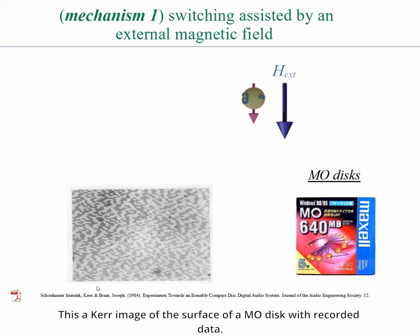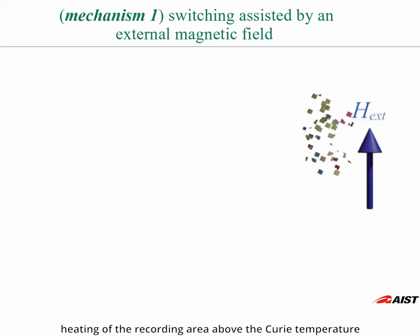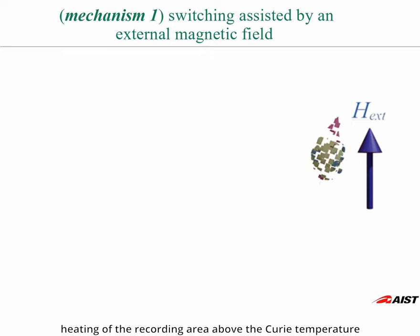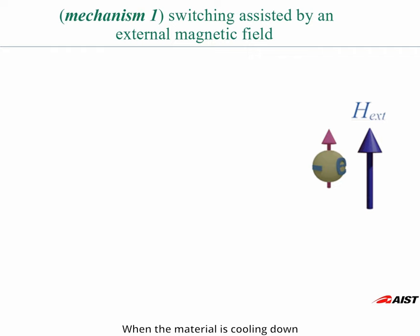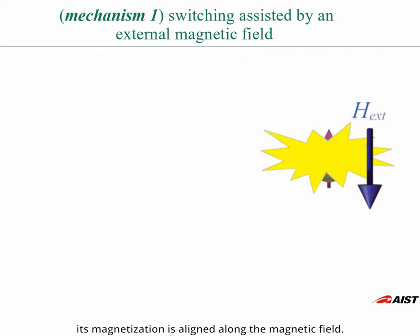This is a current image of the surface of a MO disk with recorded data. The recording mechanism is based on heating of the recording area above Curie temperature. When the material is cooling down, its magnetization is aligned along the magnetic field.